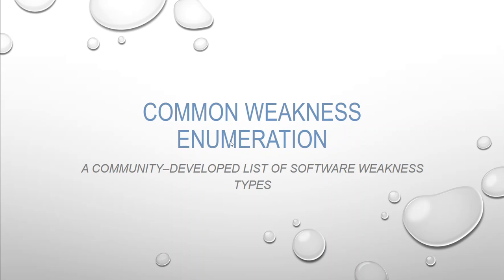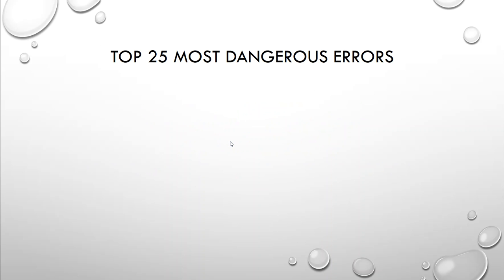Let's talk about the top 25 most dangerous errors. CWE, which stands for common weakness enumeration, has listed the top 25 most dangerous software errors that are widespread and critical, and can lead to serious vulnerabilities in software. They are often easy to find and easy to exploit. They are dangerous because they will frequently allow attackers to completely take over the software, steal data or prevent the software from working at all.